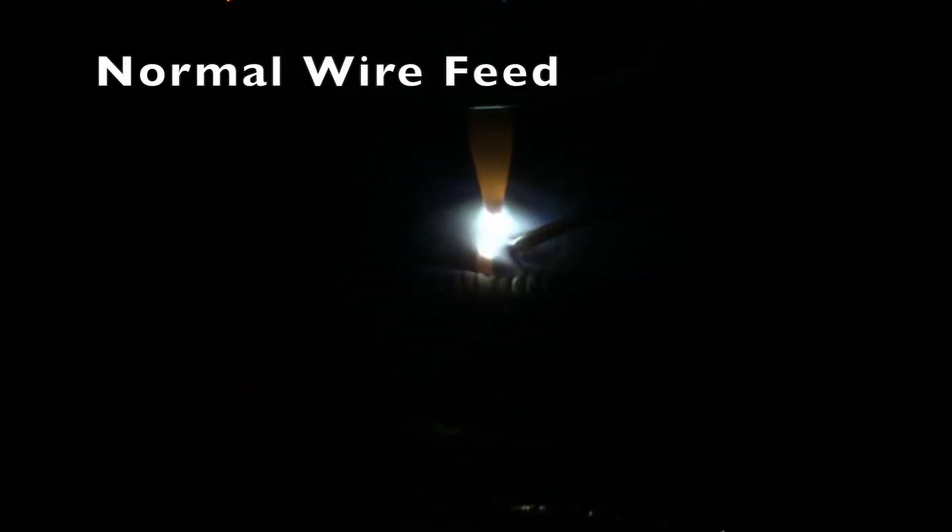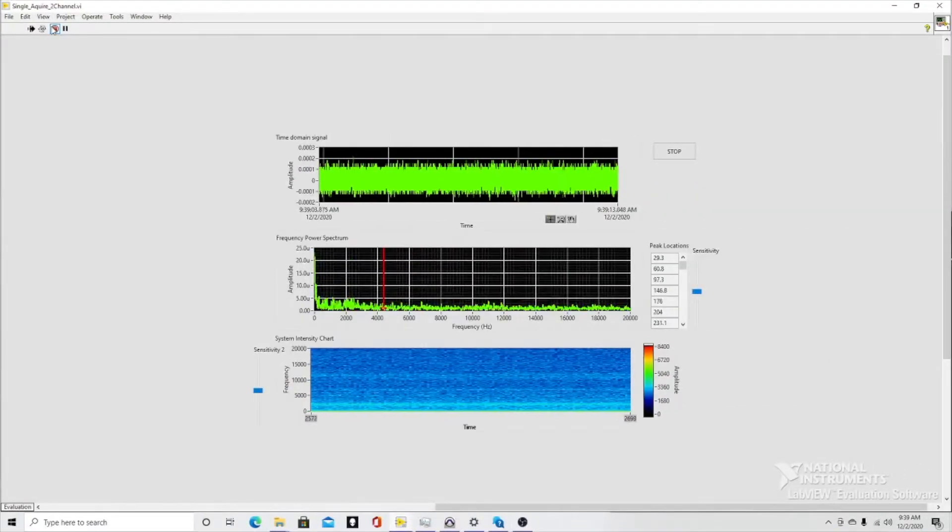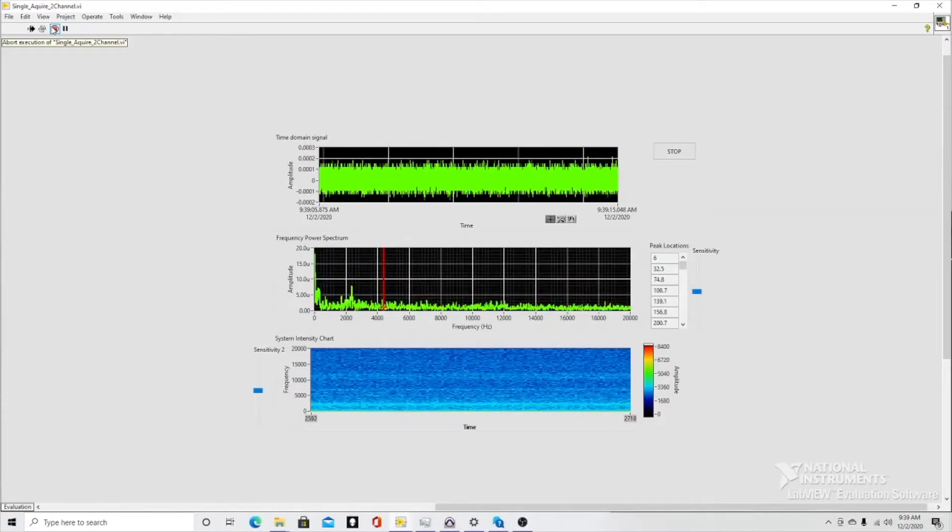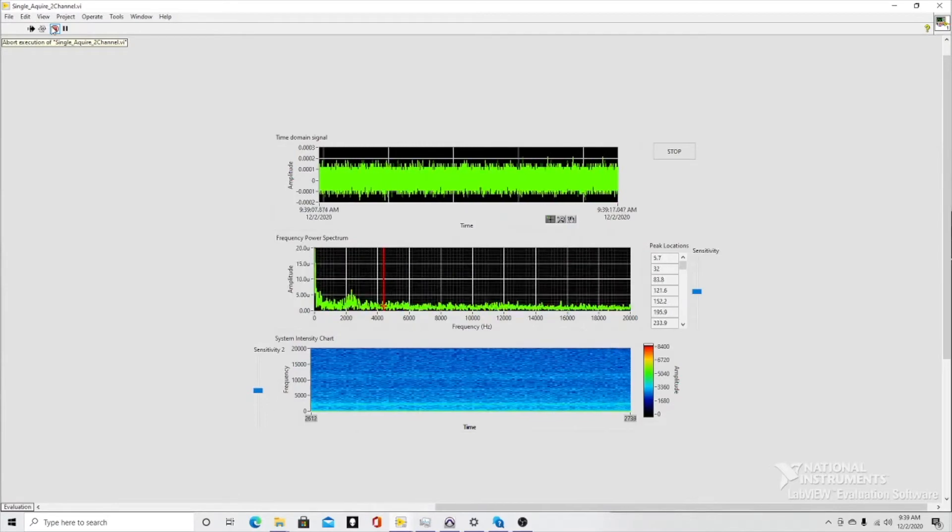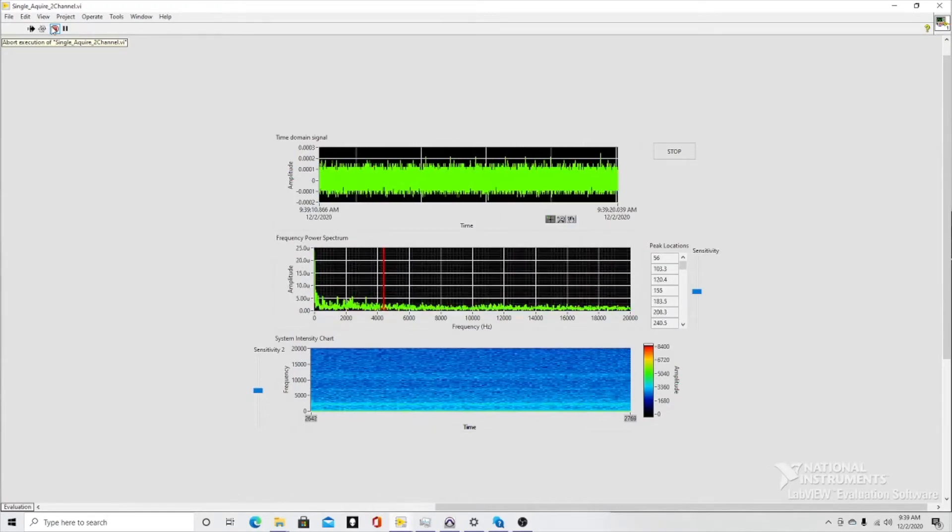This is a weld with a normal wire feed. This will result in a non-defective and ideal weld. You can see that the normal wire feed weld results in no major spikes in our FFT or charts. This is our base weld.